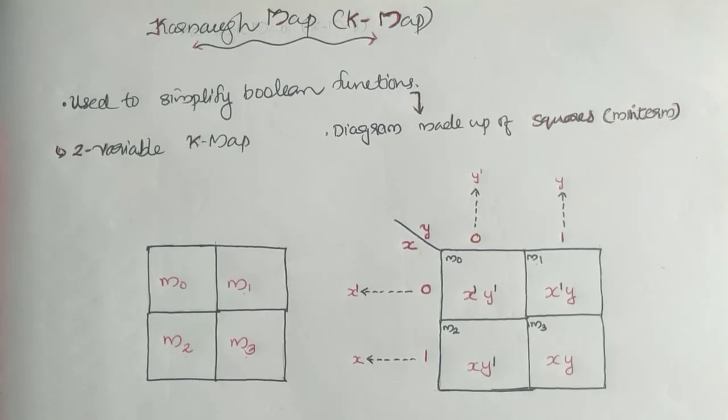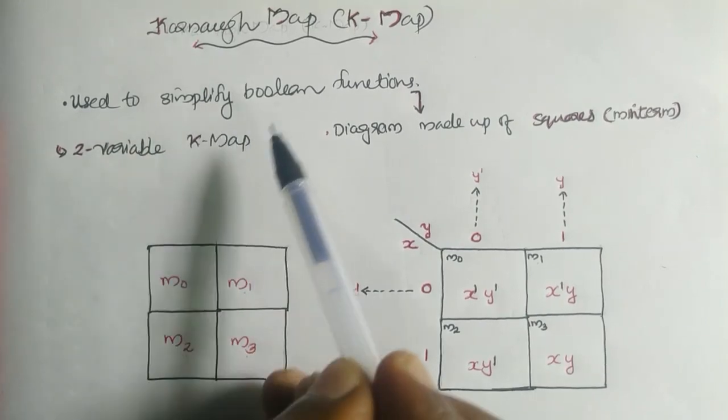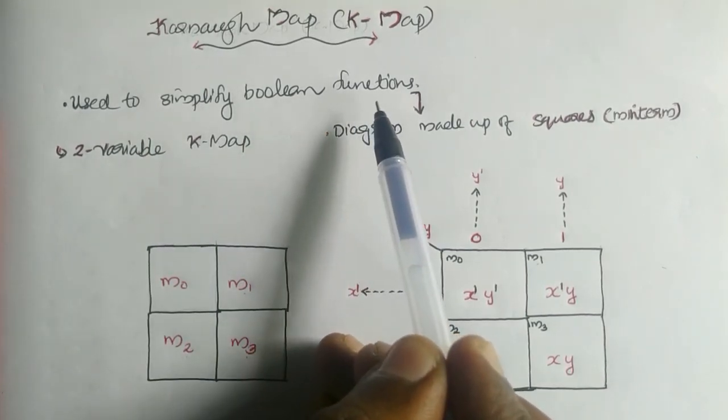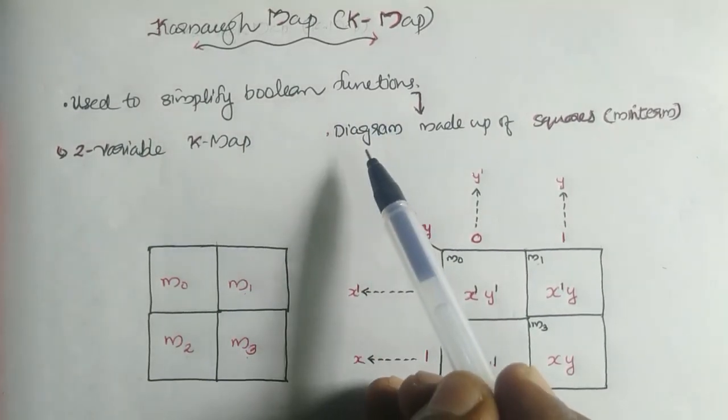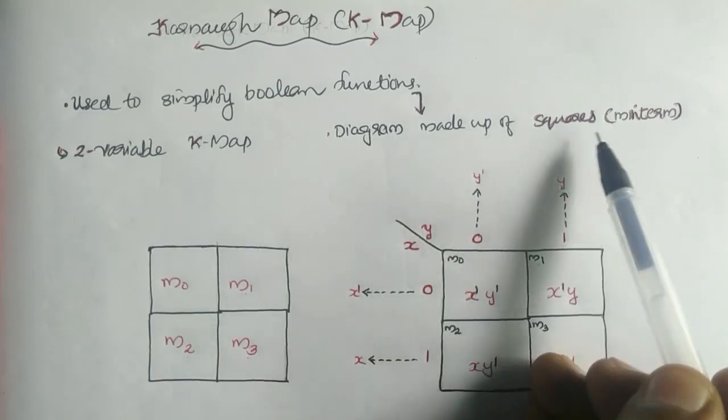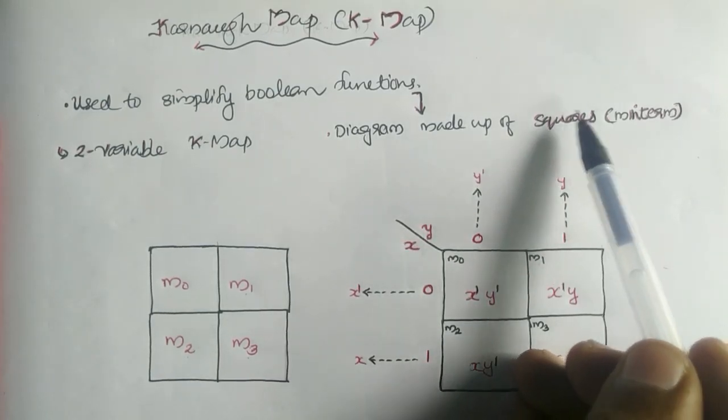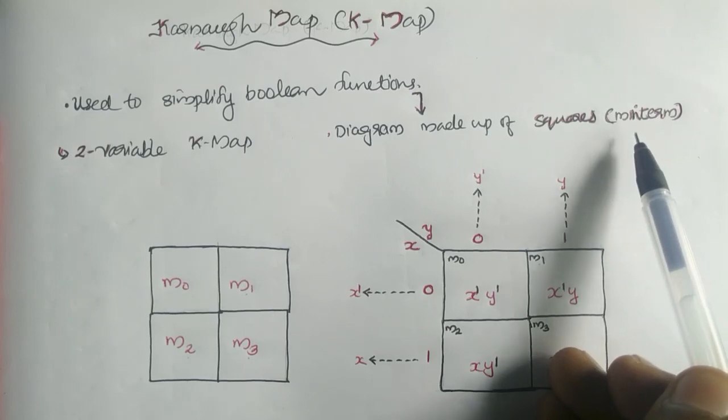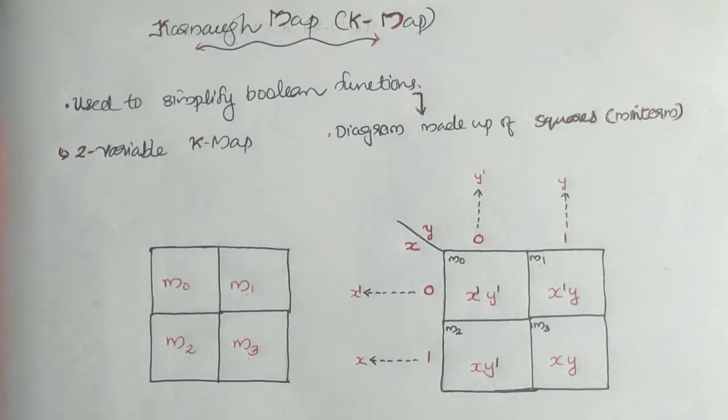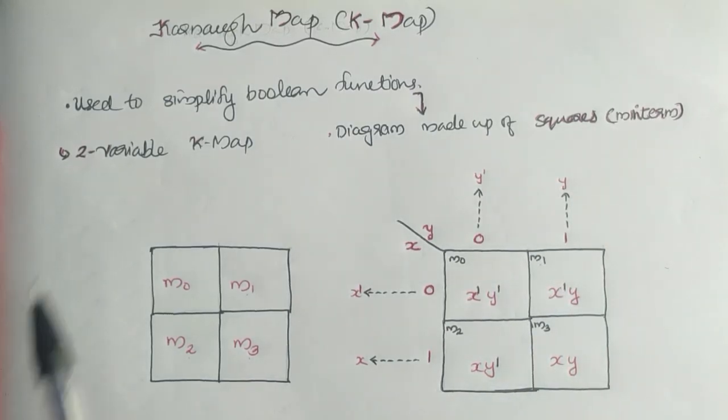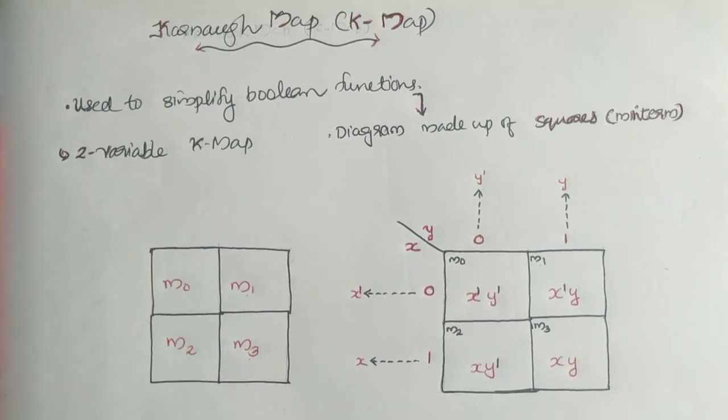Today, we are discussing K-Map or Karnaugh Map. Karnaugh Map is used to simplify Boolean functions or Boolean expressions. Karnaugh Map is a diagram made up of squares, with each square representing a minterm. We can have three types of Karnaugh Map: two-variable K-Map, three-variable K-Map, and four-variable K-Map.